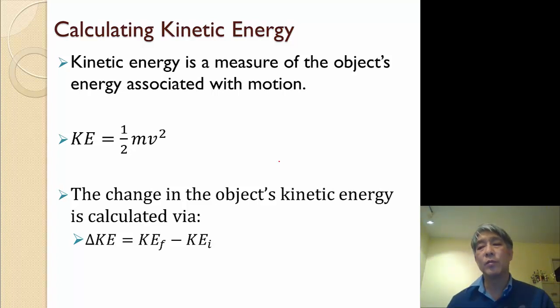So the faster something moves, the more energy it has. Frequently we're going to be looking at the change in the object's kinetic energy. We would do that with the same formula we do all of our deltas. So the change in my kinetic energy is going to be final kinetic energy minus initial kinetic energy.